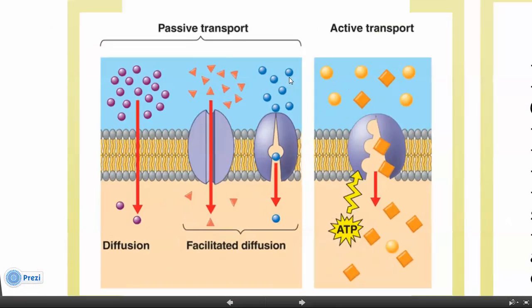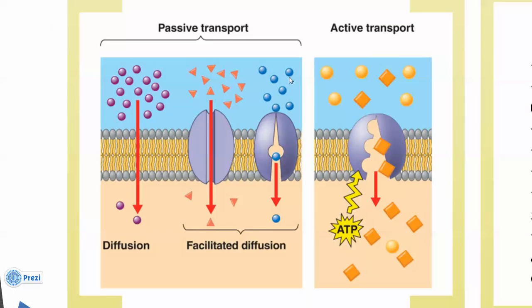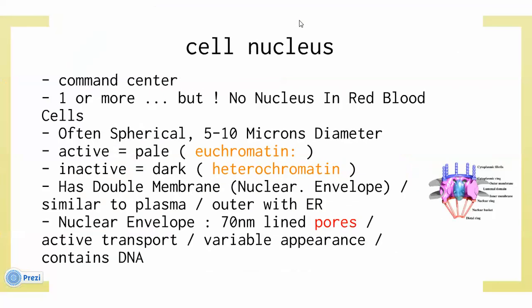In the second lecture, we first talked about transport through the plasma membrane — we won't cover that here since it was covered in physiology. Then we talked about the cell nucleus, which is the command center. In some cells, you might have one or more nuclei, but there is no nucleus in red blood cells — don't forget that. The nucleus is often spherical, with a diameter of 5 to 10 microns.